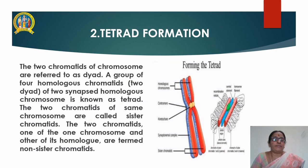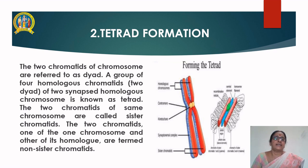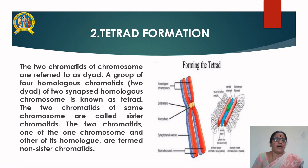Tetrad formation. The two chromatids of a chromosome are referred to as a dyad. A group of four homologous chromatids — that is, the two dyads of two synapsed homologous chromosomes — is known as a tetrad. The two chromatids of the same chromosome are called sister chromatids. The two chromatids, one from one chromosome and the other from its homolog, are termed non-sister chromatids.